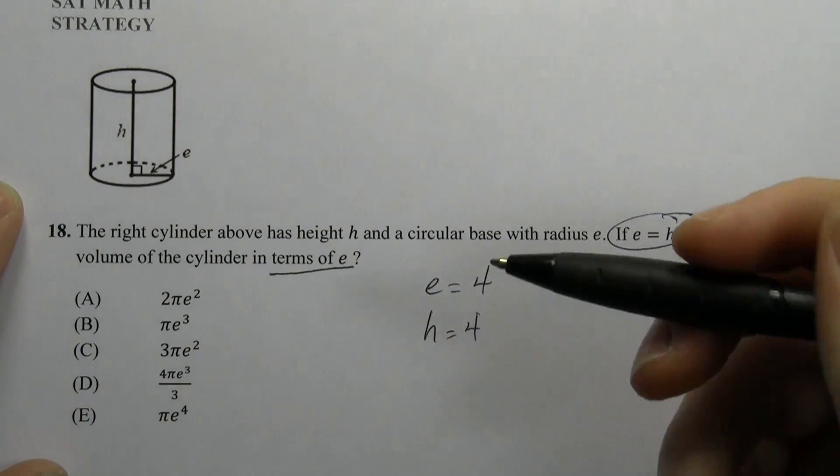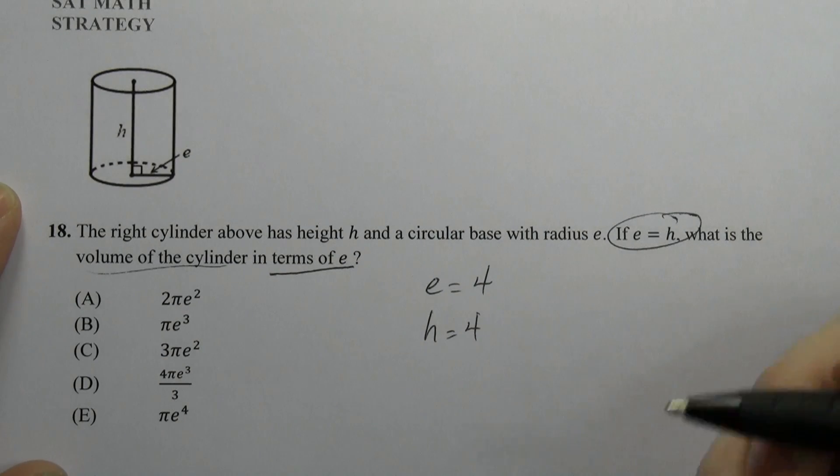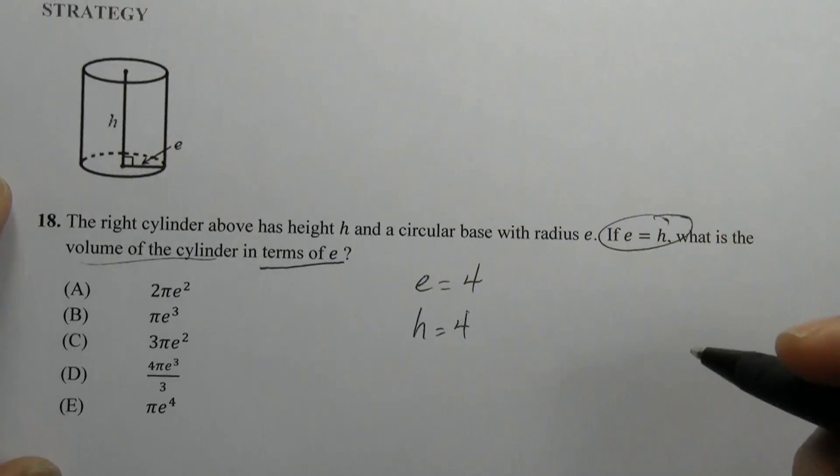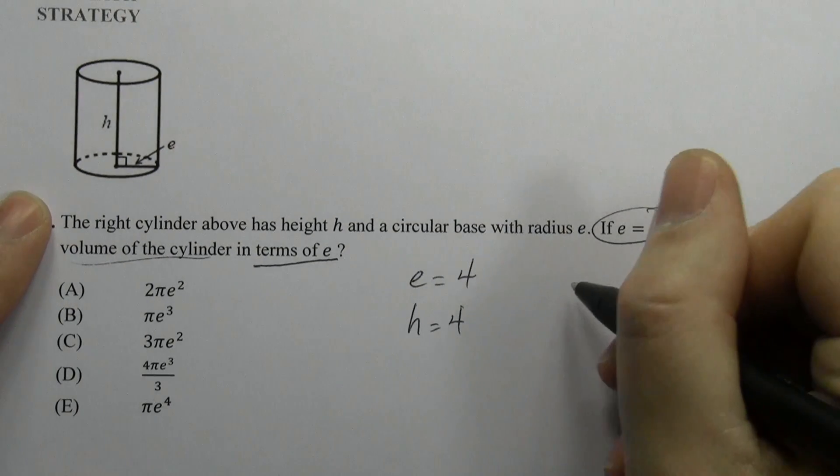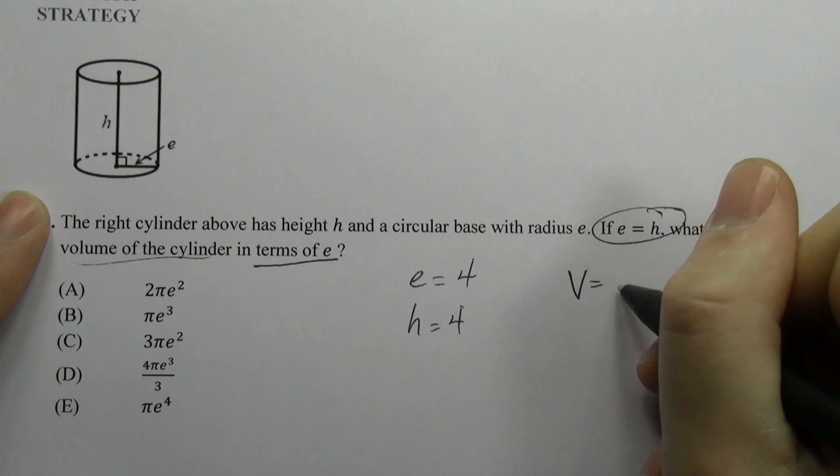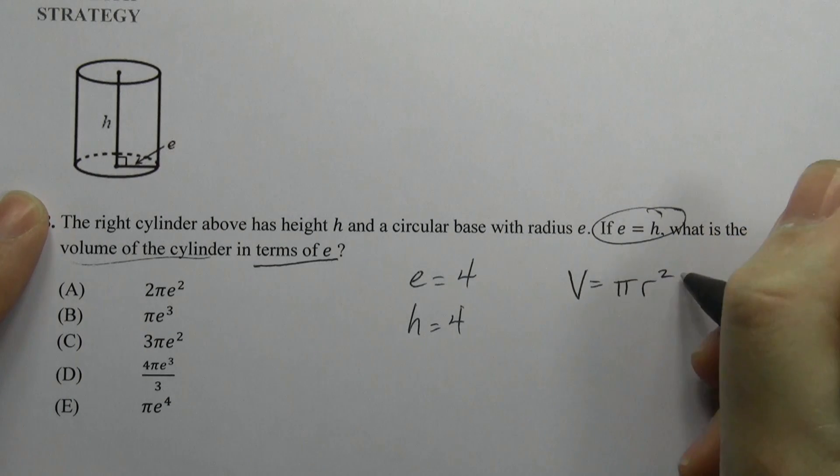And we also know that e is the radius of the circle, which is probably going to be relevant, because the question is asking for the volume of the cylinder. And you have to remember what the formula for volume of the cylinder is. I can help you with that. Volume of the cylinder is π r² h. I will not be with you when you take the test.